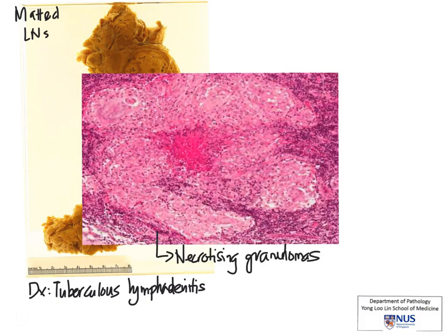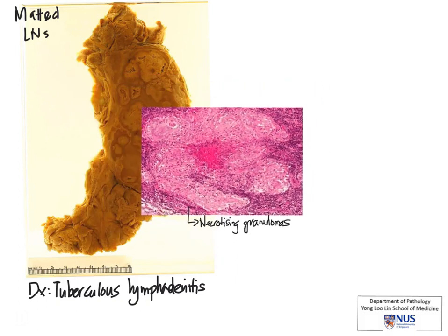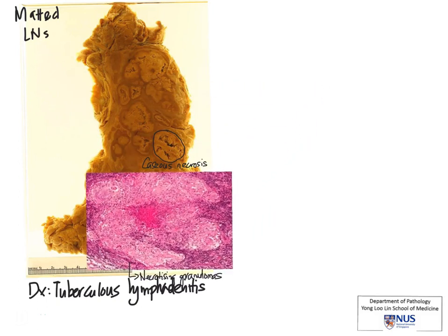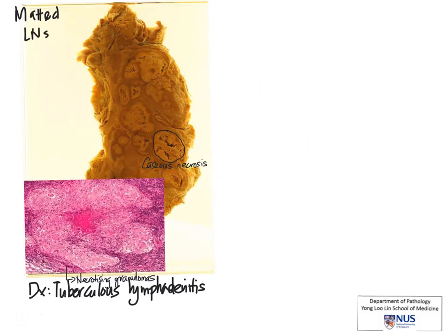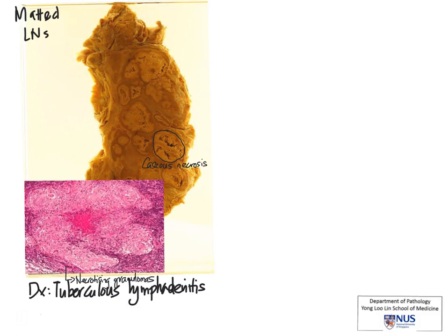Material can also be sent to the microbiology lab both for culture as well as examination for acid-fast bacilli. And in the pathology lab, we can also examine for acid-fast bacilli using the Ziehl-Neelsen stain.